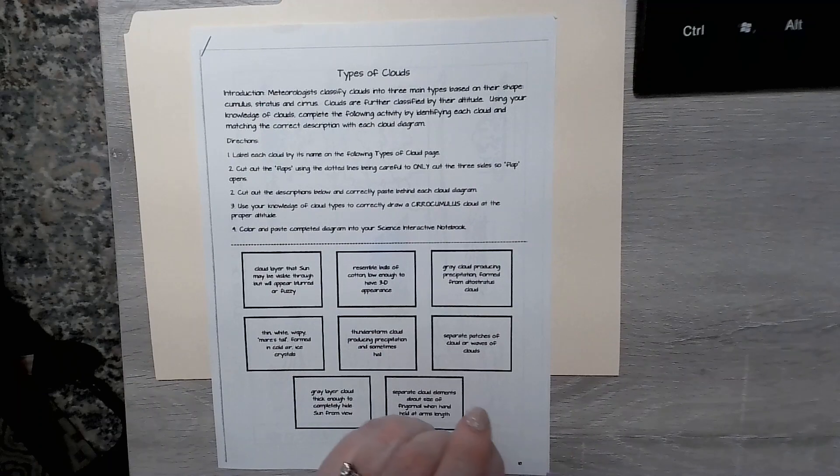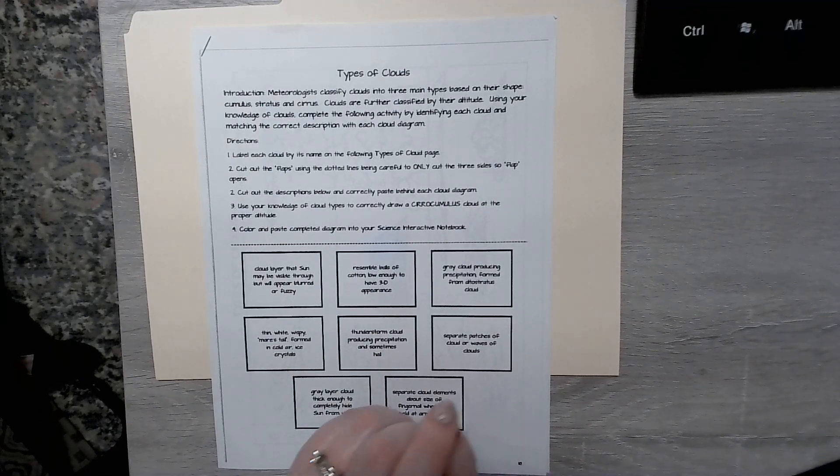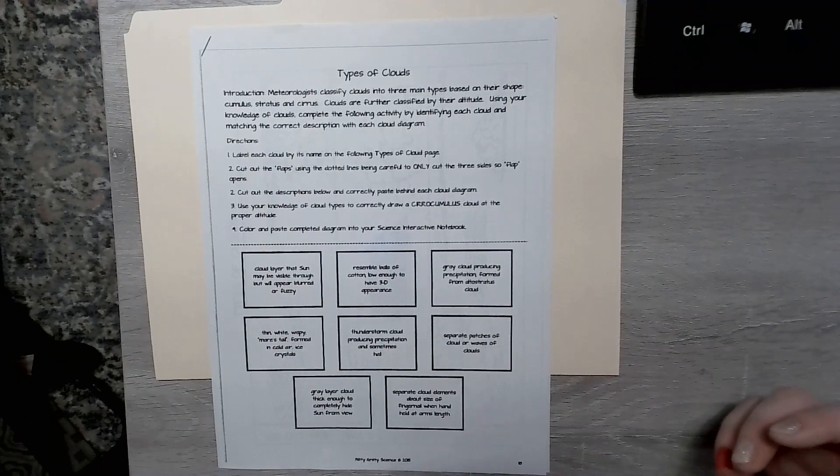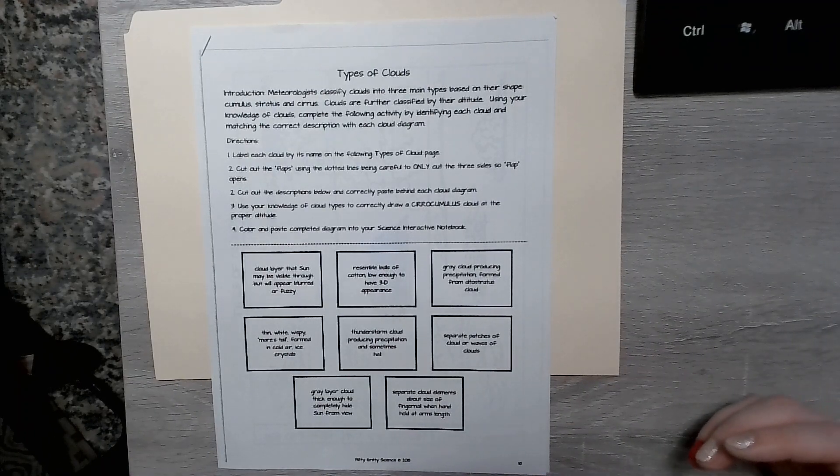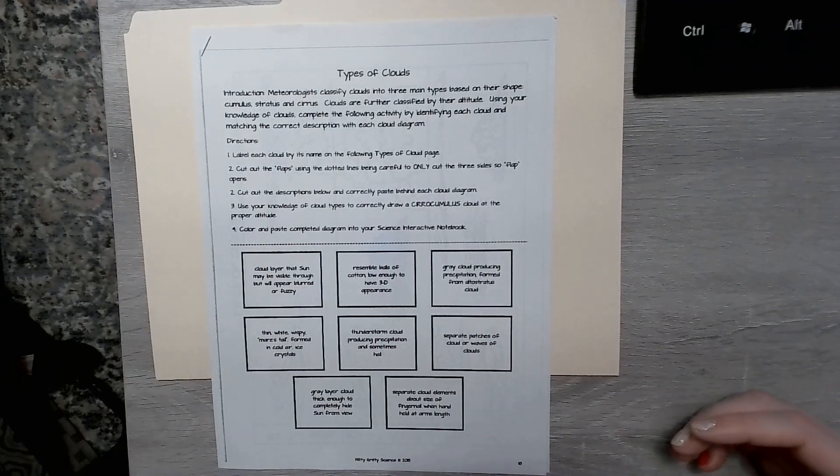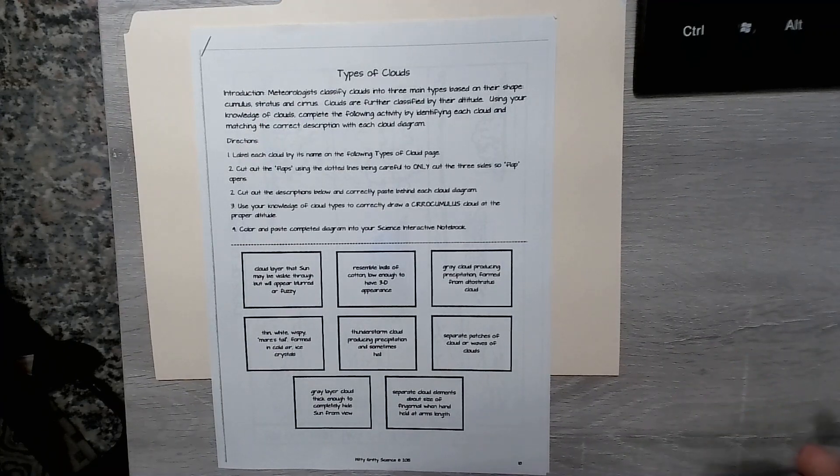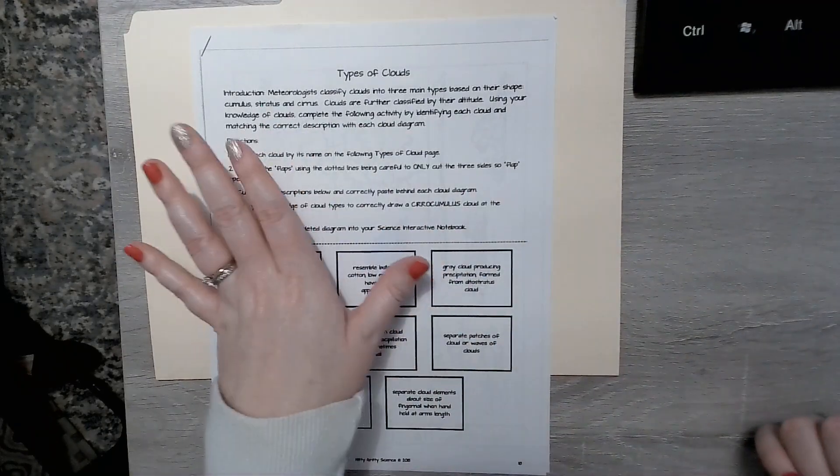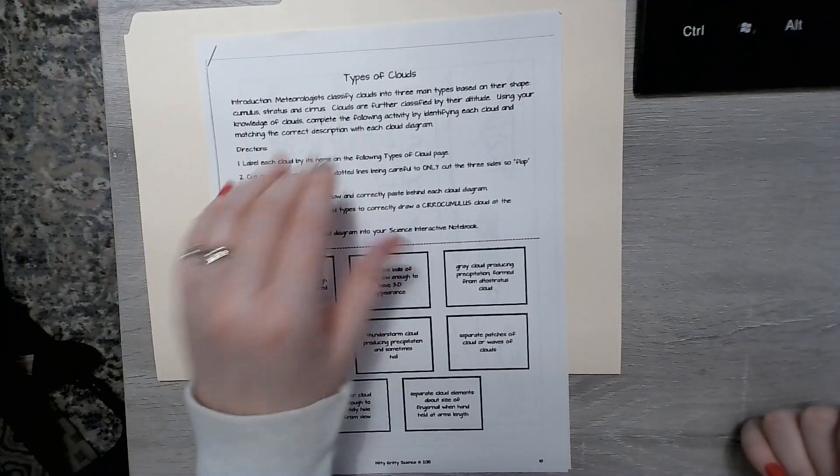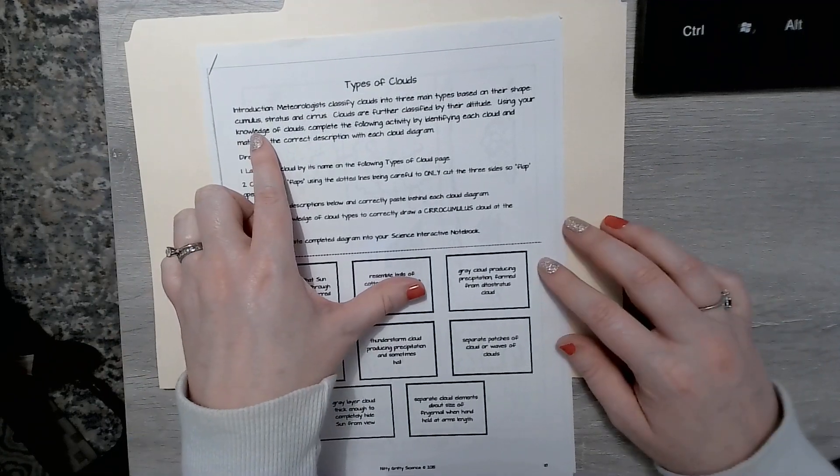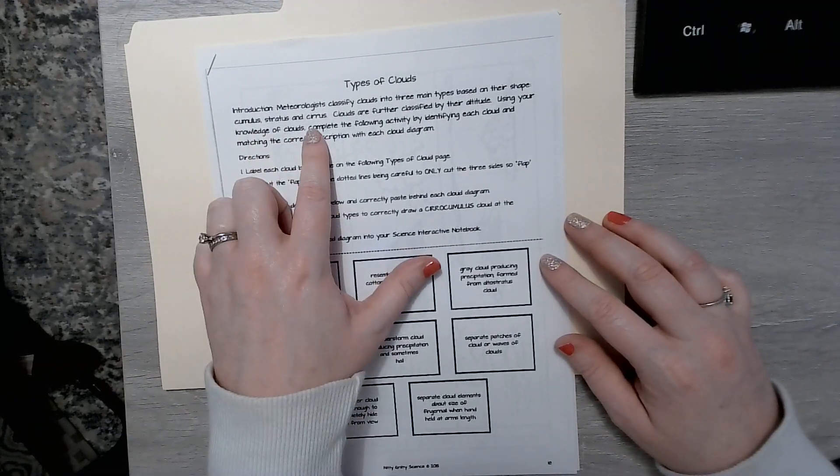So types of clouds. We didn't talk about clouds specifically, so if you're looking for more information, I am going to link a video or two into the Schoology page to help you with this. Meteorologists classify clouds into three main types based on their shape: cumulus, stratus, and cirrus.